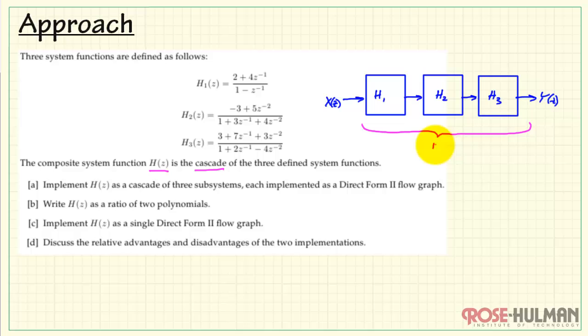The overall system function is H of Z. With these subsystems in cascade, the system function overall is the product of the individual system functions for each block. So we have H1 times H2 times H3. Now, in part A, we want to implement H of Z as the cascade of three subsystems, each implemented as a direct form to FlowGraph.